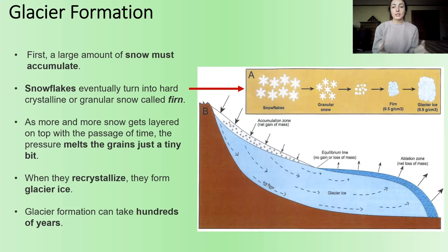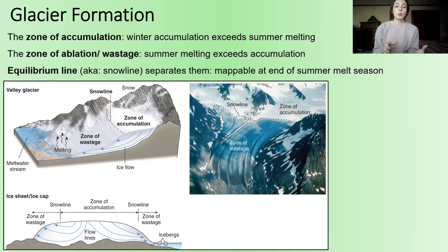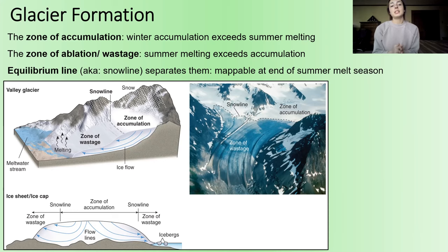This firn, over time, gets compressed more and more and partially melted and recrystallized enough times to turn into a congealed mass of glacier ice. This formation of glaciers can take hundreds of years. In this figure to the top left, we can see the zone of accumulation and the zone of wastage. There's one zone where snow is accumulating and eventually getting compacted and forming into glacial ice, whereas another zone has more melting than accumulation — the wastage zone, where ice is lost, not gained. When glaciers have more accumulation than wastage they advance, and when they have more wastage they retreat. The equilibrium line, also called the snow line, separates the two zones.